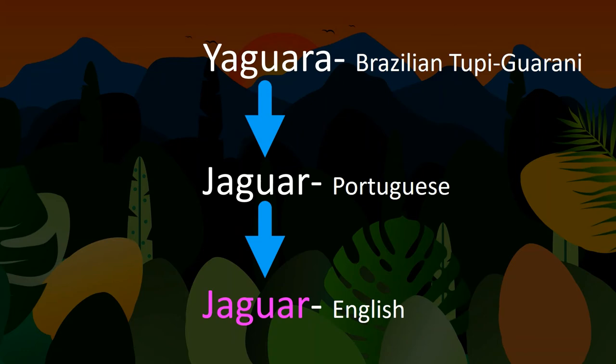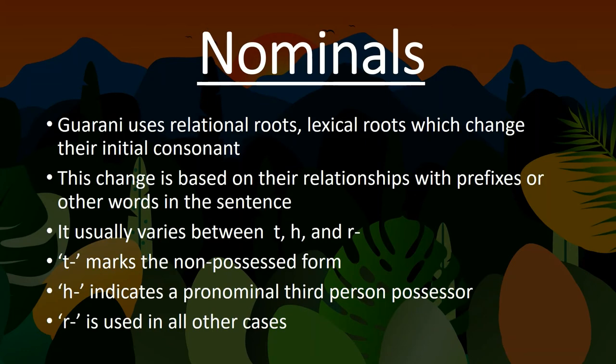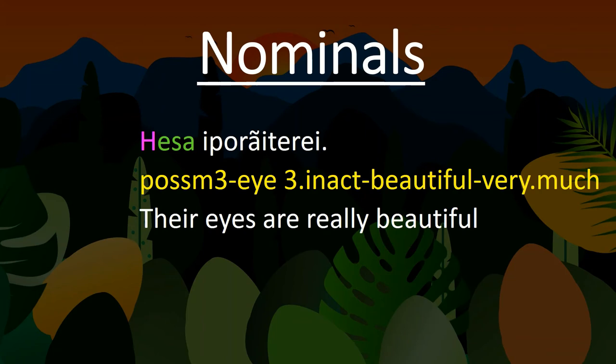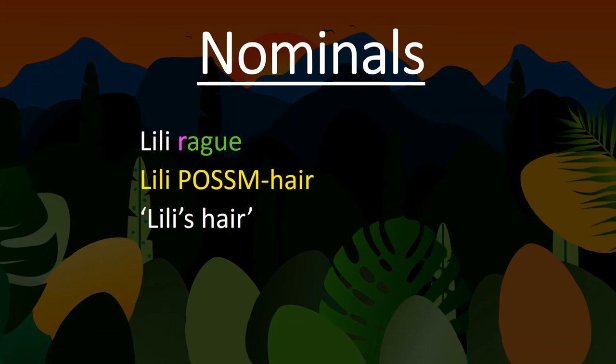Guarani uses something called relational roots, which essentially tie the nouns to suffixes, prefixes, and other words in the sentence. And the letter used can also vary based on intended use. For example, when T is used, it marks the non-possessed form. H indicates the third person possessor, and the initial R is used for all other cases.